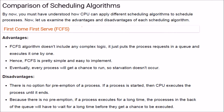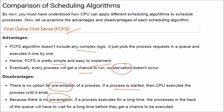Comparing scheduling algorithms: FCFS involves no complex logic — processes are queued and executed one by one in arrival order, making it simple to implement. Every process gets a chance to run and there is no starvation. However, there is no preemption; once a process starts, it runs until completion, so processes waiting behind long-running ones suffer extended wait times.